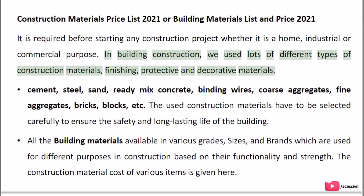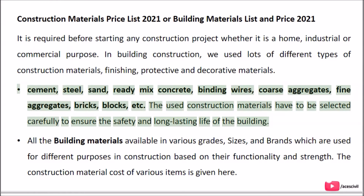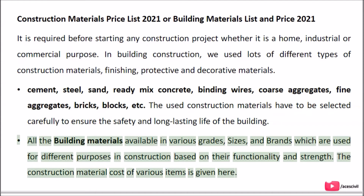In building construction, we use lots of different types of construction materials — finishing, protective and decorative materials — such as Cement, Steel, Sand, Ready-Mix Concrete, Binding Wires, Coarse Aggregates, Fine Aggregates, Bricks, Blocks, etc. The construction materials have to be selected carefully to ensure the safety and long-lasting life of the building. All building materials are available in various grades, sizes, and brands, used for different purposes based on their functionality and strength.